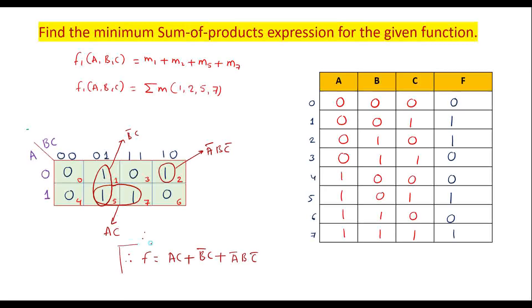So this is how we can simplify a given Boolean expression using KMAP. In my next video, I will explain 4-variable KMAP. Thank you for watching.